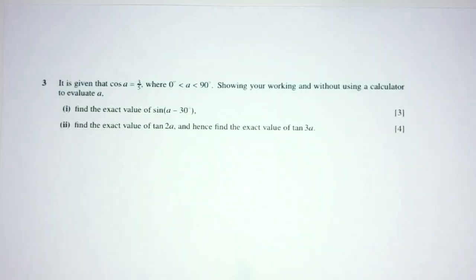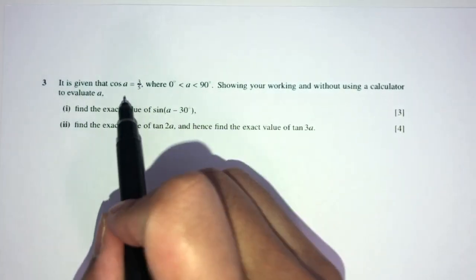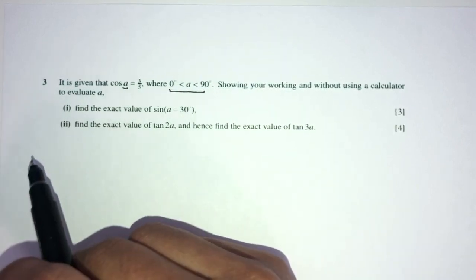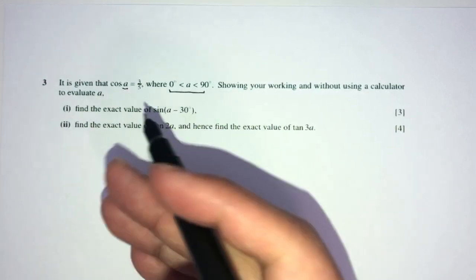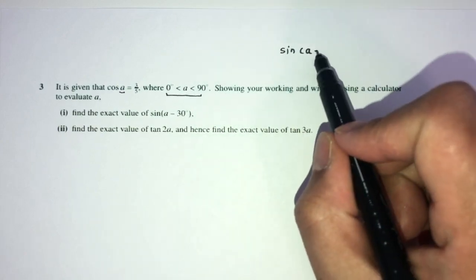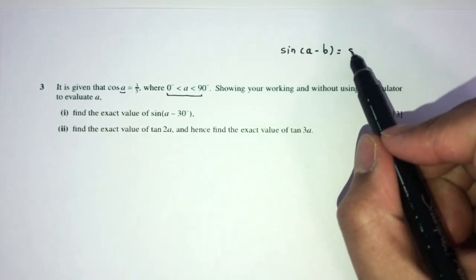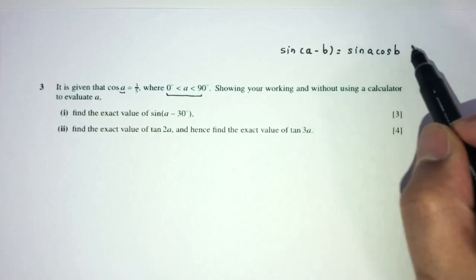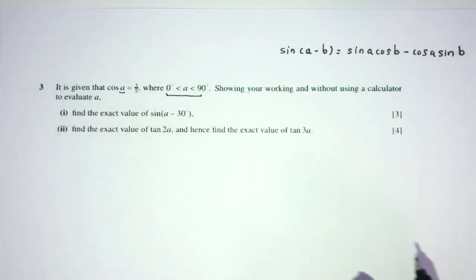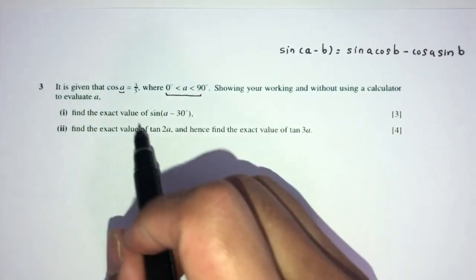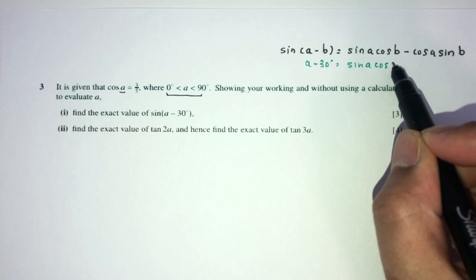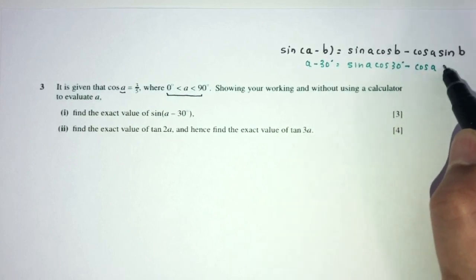Now let's move on to question number 3. It is given that cos A equals 3 over 5, and angle A is acute, between 0 and 90 degrees. We have to find the exact value of sin(A minus 30), showing our working without a calculator. We can break this down using our compound angle formula: sin(A minus B) equals sin A cos B minus cos A sin B. Substituting, we get sin A times cos 30, minus cos A times sin 30. Sin 30 is a half, and cos 30 is root 3 over 2.